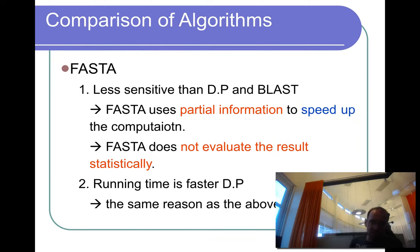FASTA is less sensitive than BLAST also, but it uses important information to speed up the computation. And the reason why it's less sensitive than BLAST is because it actually doesn't have a good statistical model. It does randomization sequences and calculating that, but it's much faster than BLAST.